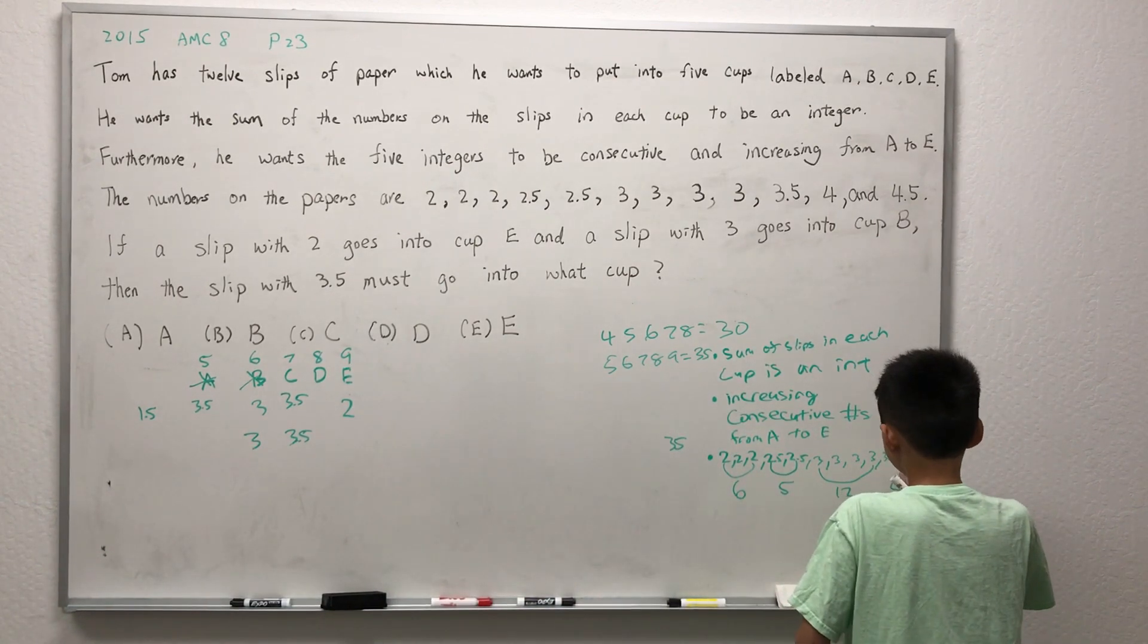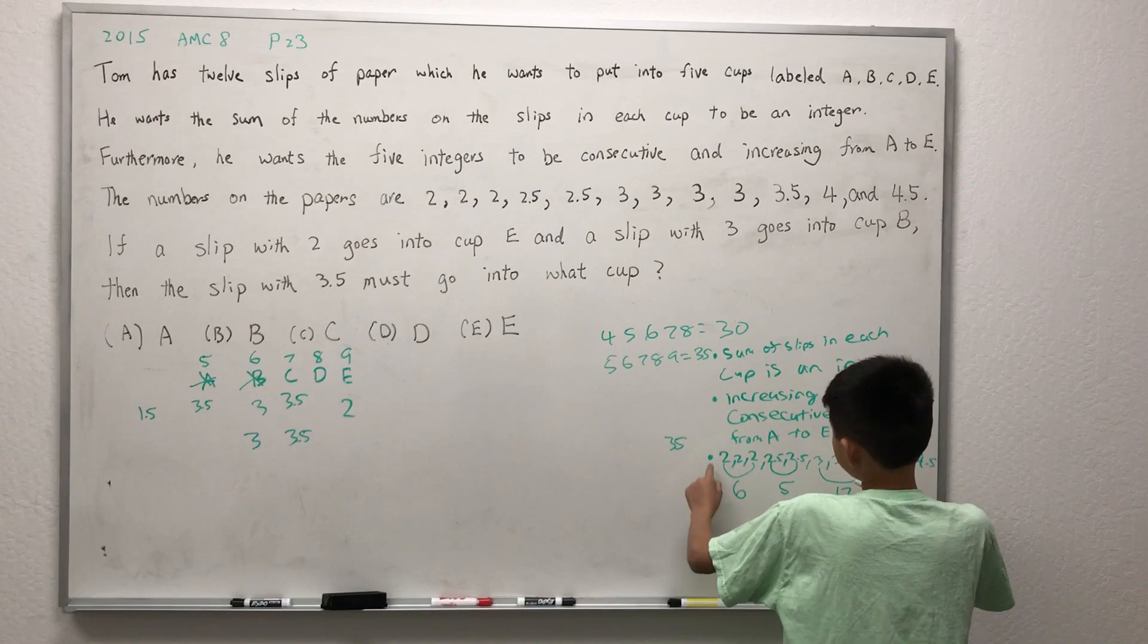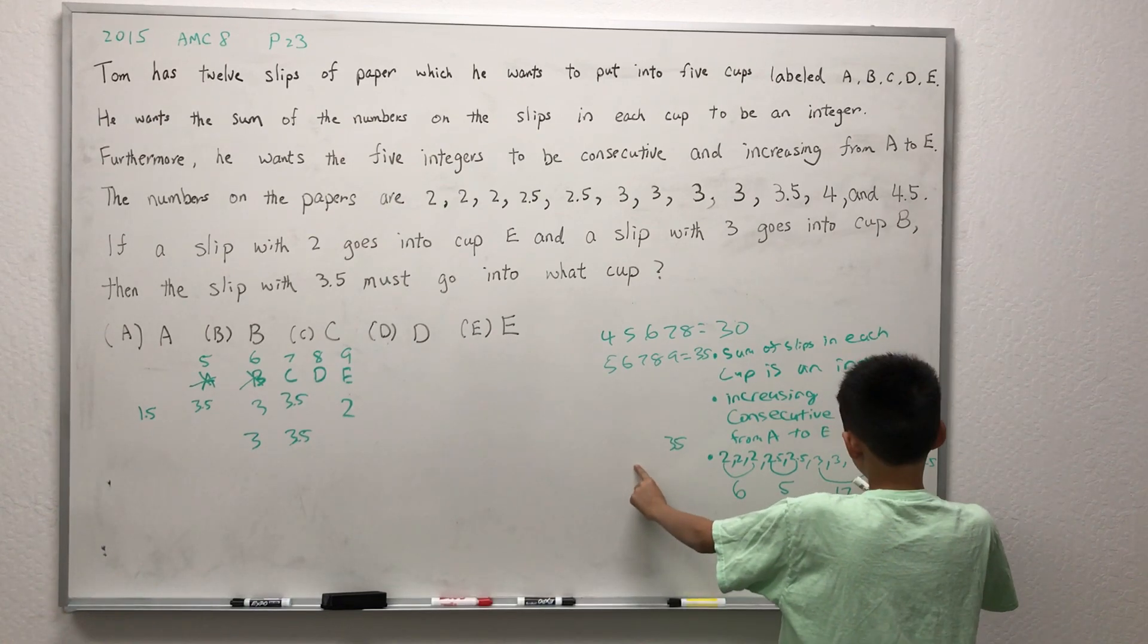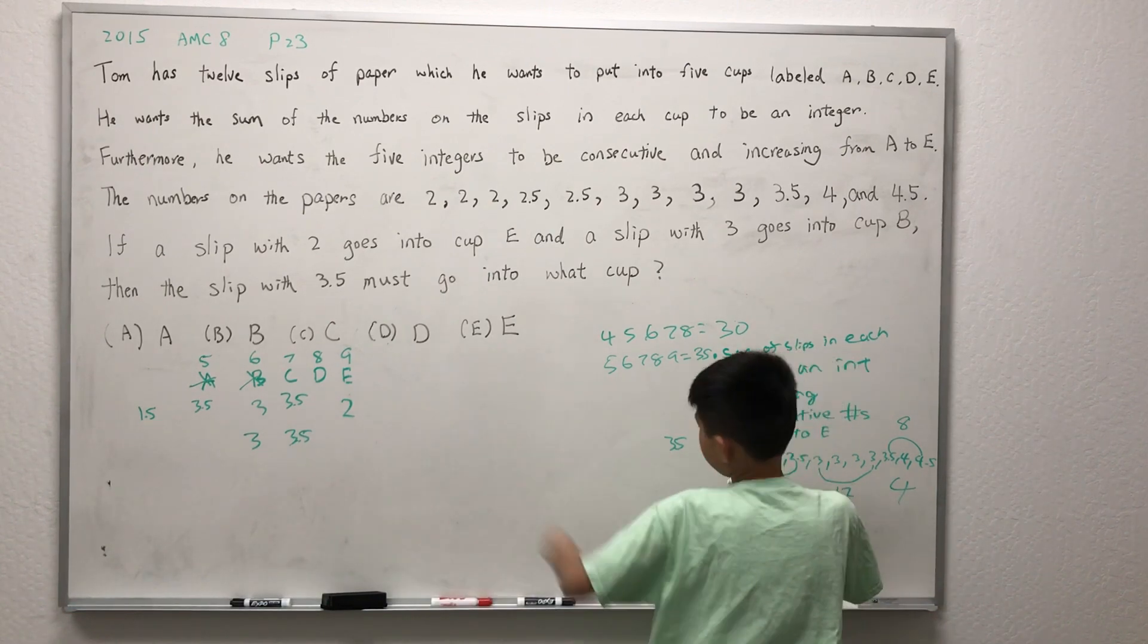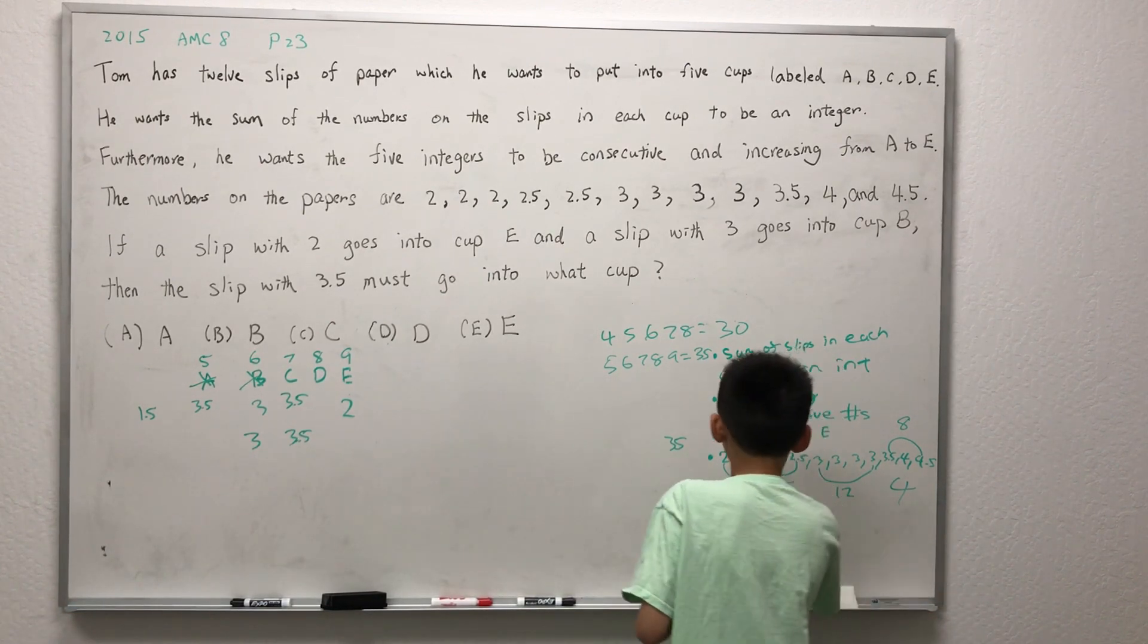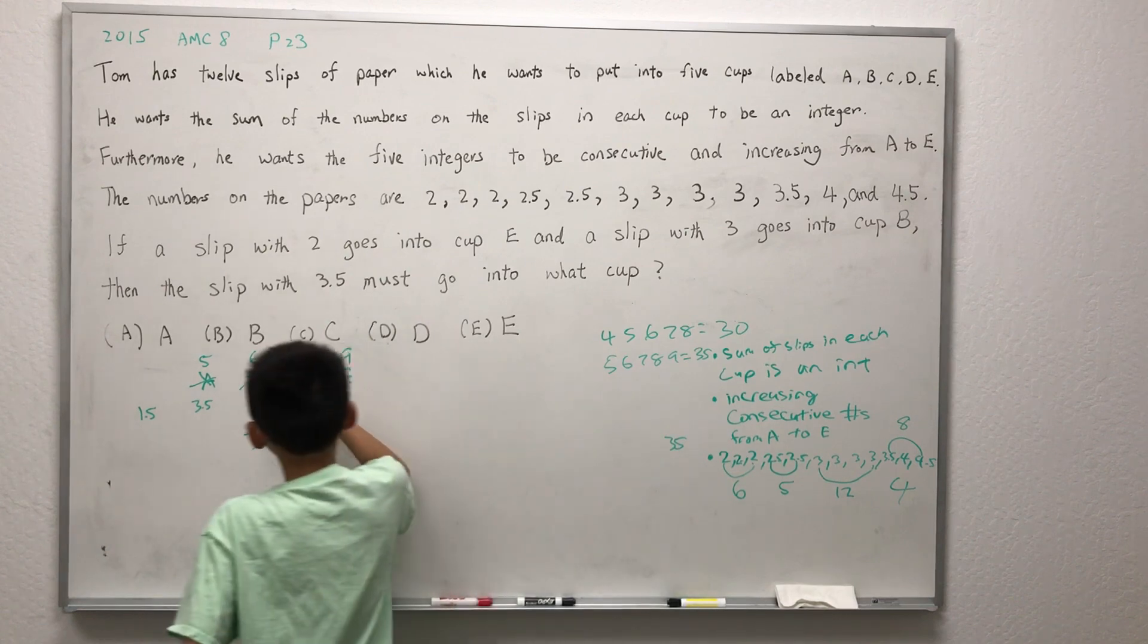3, well there's no 0.5, so it doesn't work. 2.5, there's no 1, so it doesn't work. 2, we need a 1.5 to add up to 3.5, but that doesn't work as well. So option C is out.